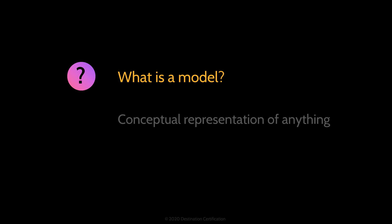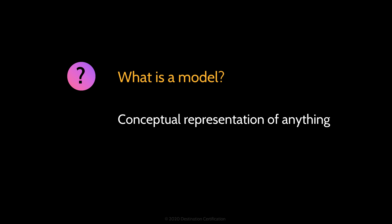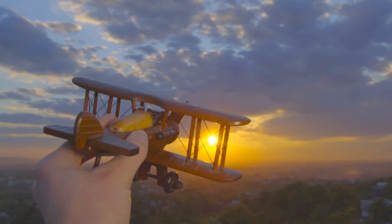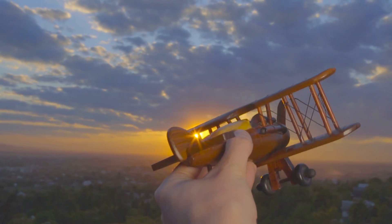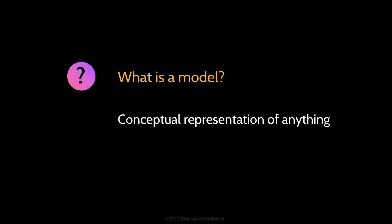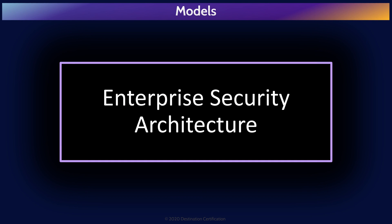So what are models? They are conceptual representations of things. They allow us to shrink something down and simplify it. We have models of cars and models of planes and models of enterprise security architectures. Models help us break down complex systems into their components. Once we understand the components, we can protect each of them, tackling the problem of baking security into every aspect of even highly complex systems. We'll cover models focused on confidentiality, integrity, conflicts of interest, and models covering the entire enterprise security architecture.